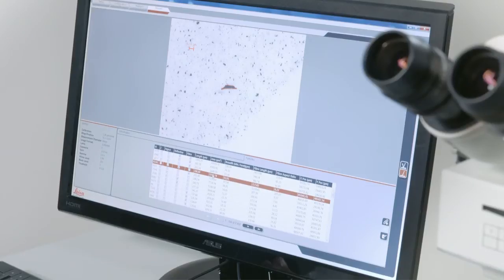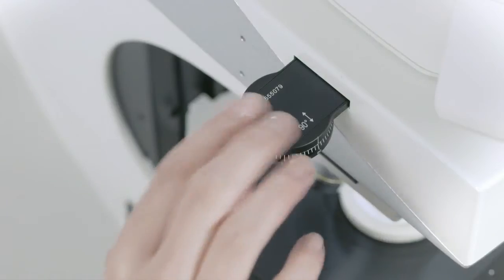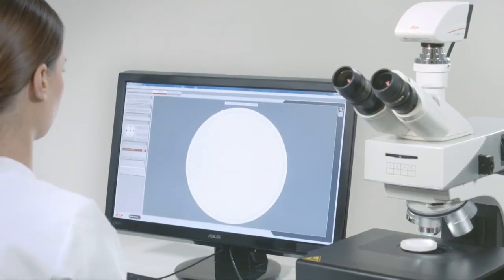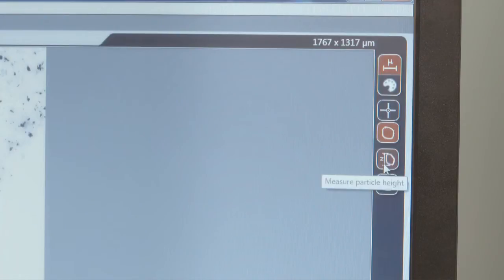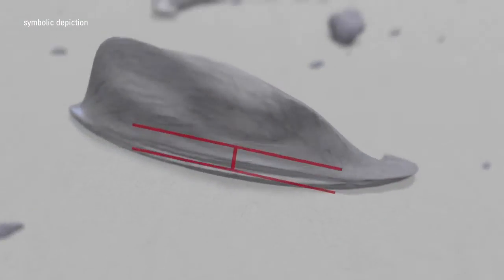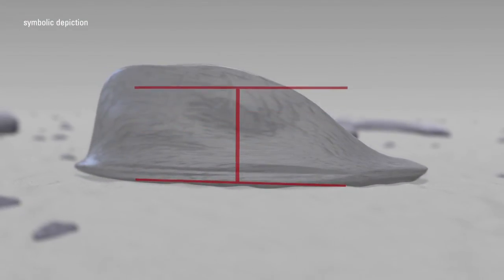The Leica DM 2700M is an ideal microscope for precision measurement with manual adjustment possibilities. Moreover, it's able to measure particle height in order to provide you with three-dimensional information.